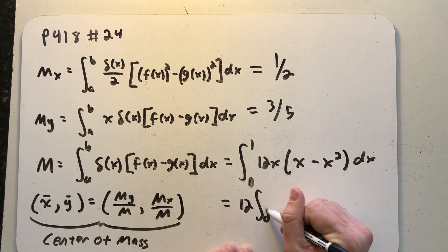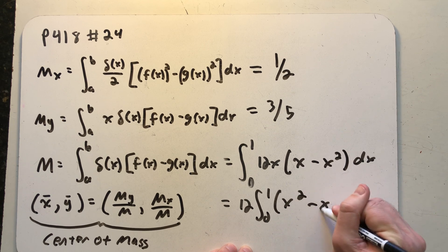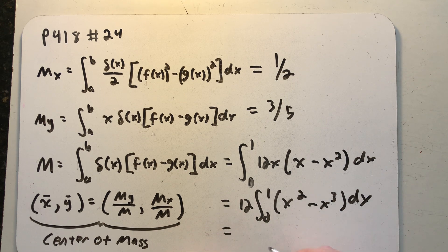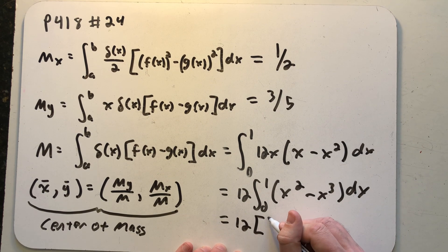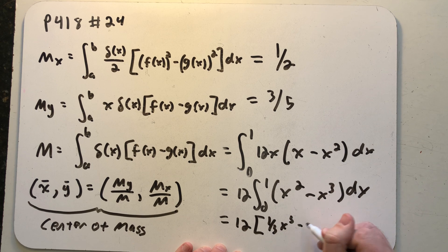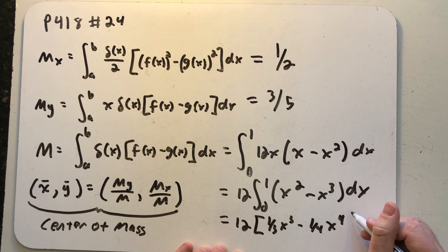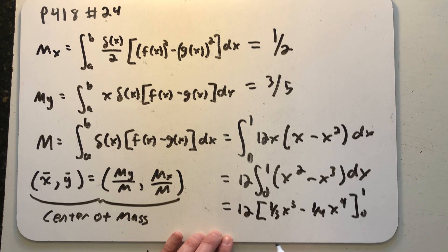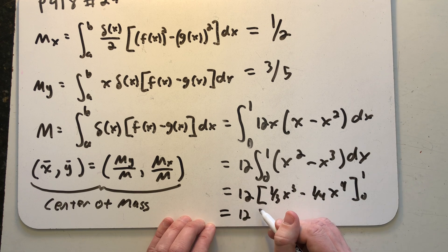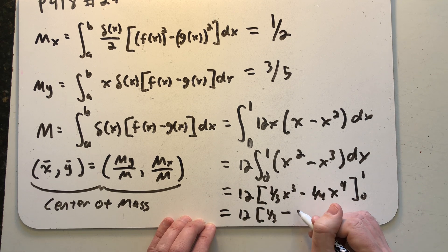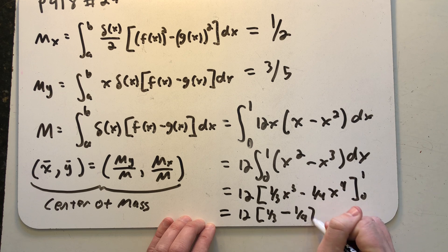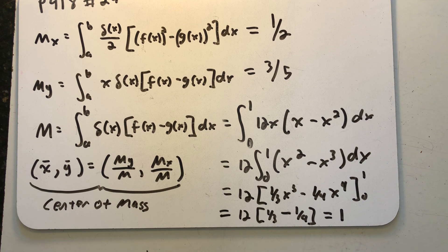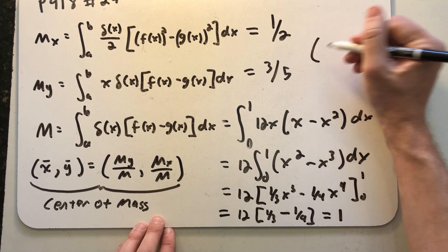I can pull out that 12, distribute that x through, and get one third x cubed minus one fourth x to the fourth evaluated from zero to one. That's going to be 12 times one third minus one fourth and when all of that is evaluated we find out that the total mass of the system is one making the center of mass very easy to calculate.